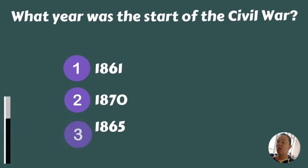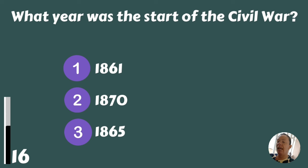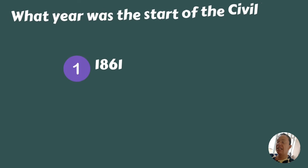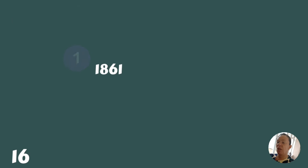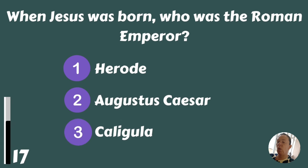What year was the start of the Civil War — 1861, 1870, or 1865? 1861. When Jesus was born, who was the Roman Emperor? Augustus Caesar.